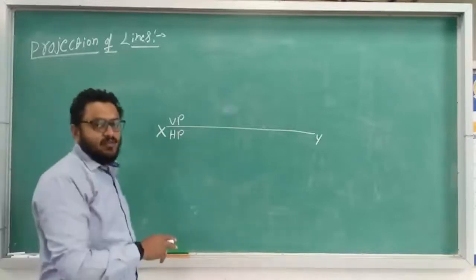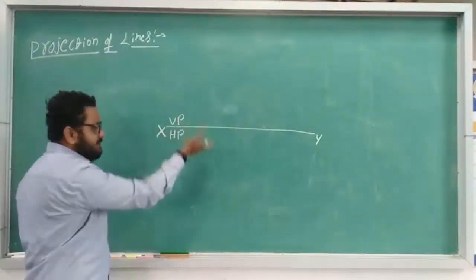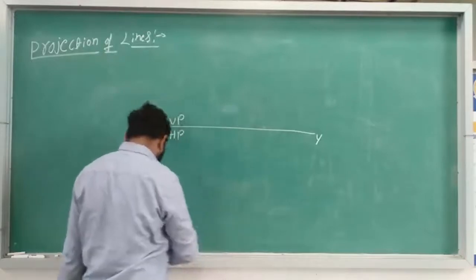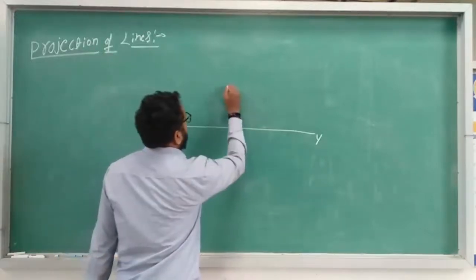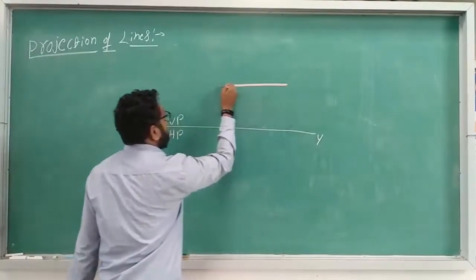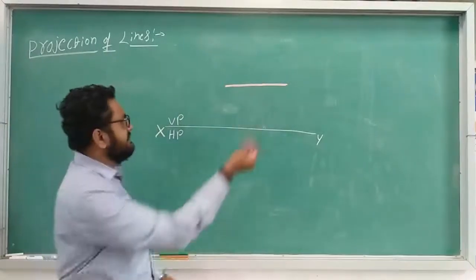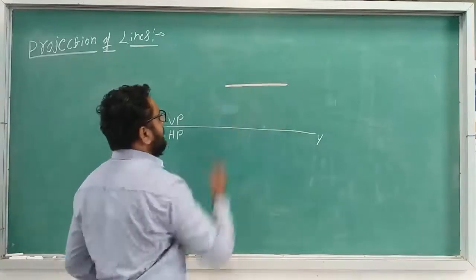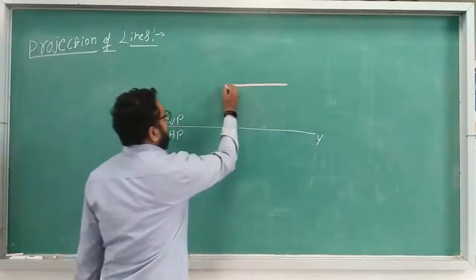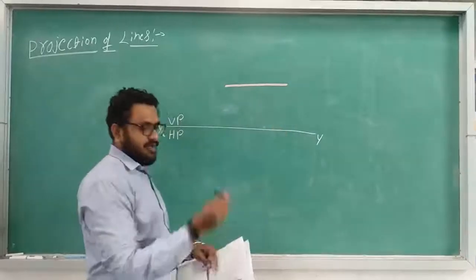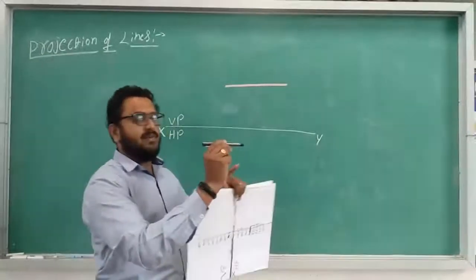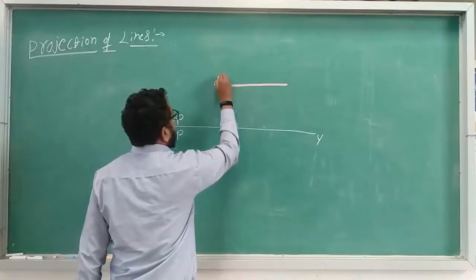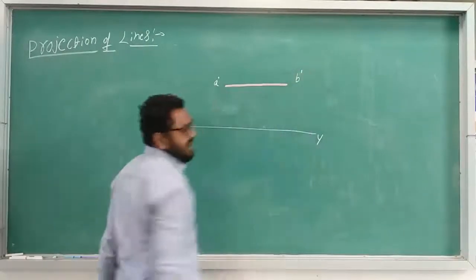For first angle projection on a 2D drawing, the HP comes below the XY line and VP comes above the XY line. The front view will look like a straight line — since the line is parallel to the vertical plane, it will show the actual length in the front view. The line has two ends: one end is named A and the other B. For the front view, we use the naming A-dash and B-dash.